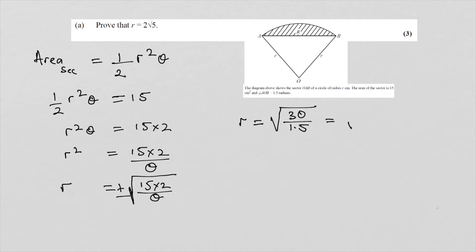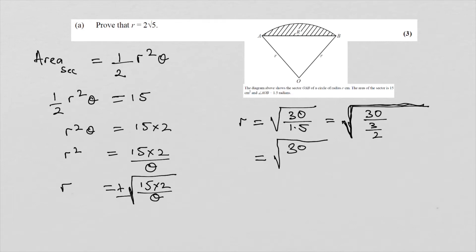That would be the square root of 30 over 3 over 2, since 1.5 is 3 divided by 2. And that would be the square root of 30 times 2 over 3. Since 3 goes into 30 giving 10, and 10 times 2 is 20, so R equals the square root of 20.